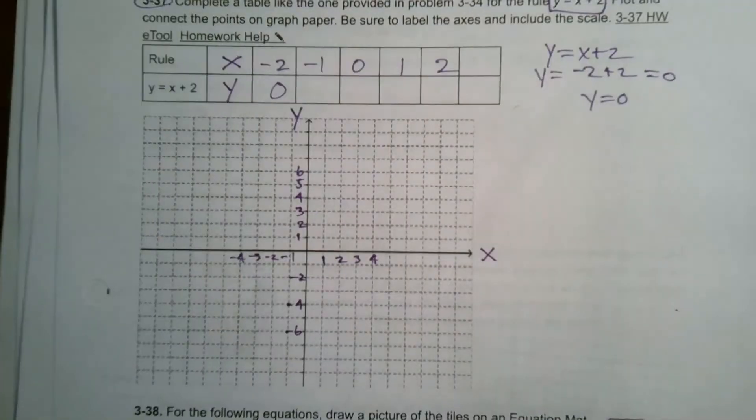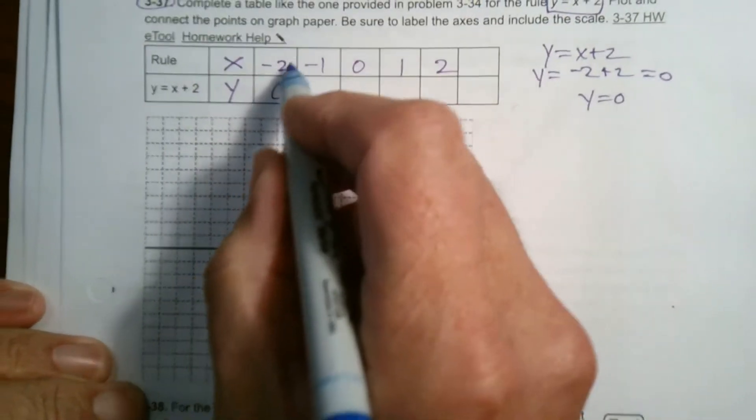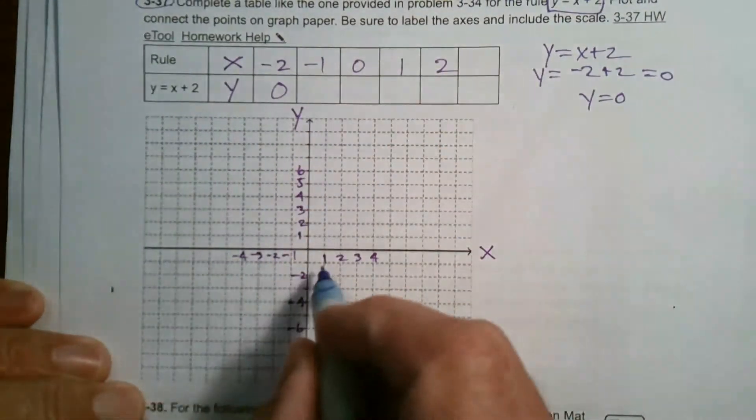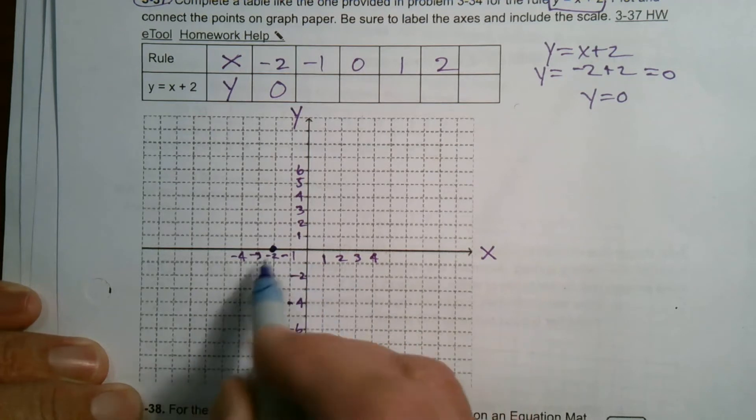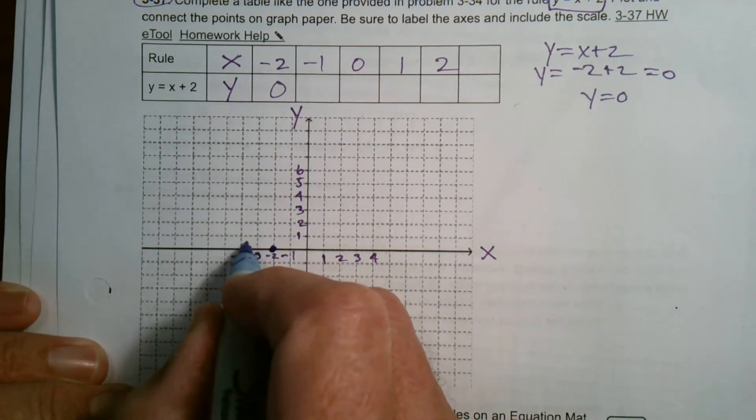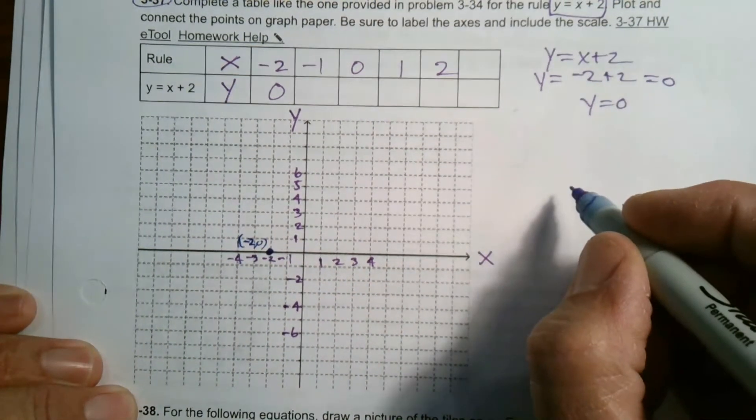So this 0, negative 2, where is that? That's the coordinate where y is 0, x is negative 2. So where x is negative 2, y is 0, that's this point right there, that's negative 2, 0. So that's the point, negative 2, 0. It would be that point. Negative 2, 0.